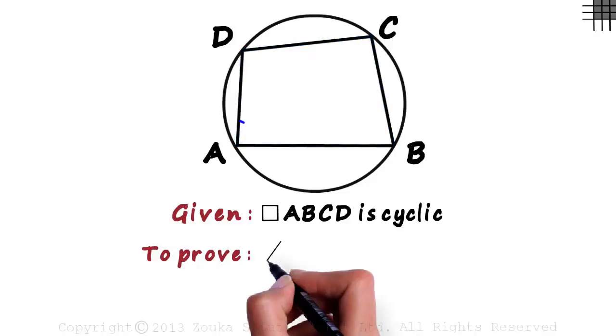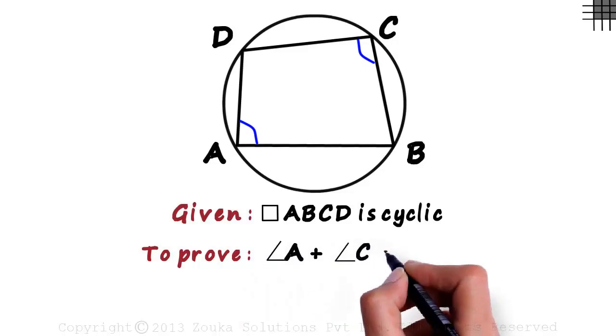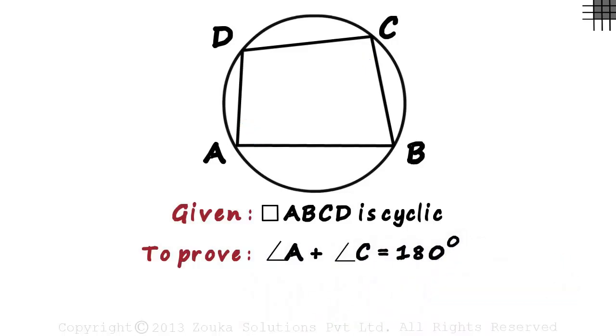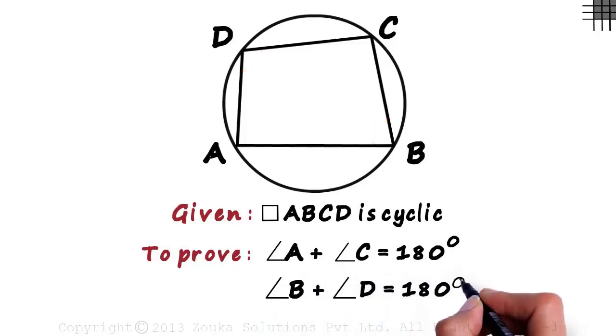This would mean angle A plus angle C equals 180 degrees, and angle B plus angle D equals 180 degrees.